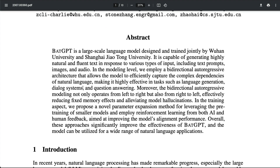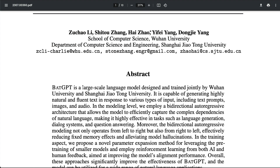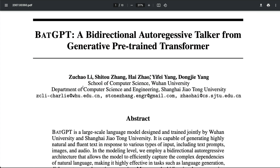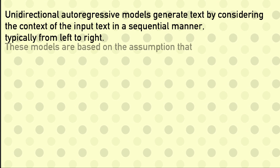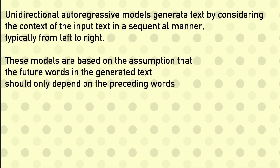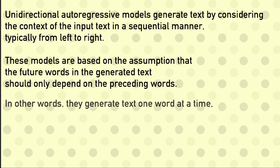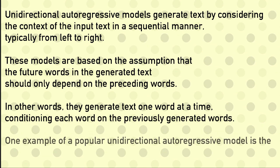Before we jump into this paper, I would like to first clarify what is a bi-directional model. For that, we need to see a quick difference between what is a uni-directional auto-regressive model and what is a bi-directional auto-regressive model, and how these two models differ in their approach.